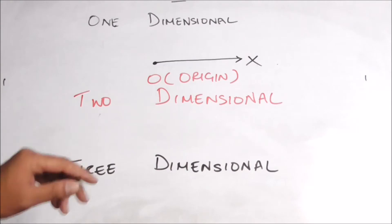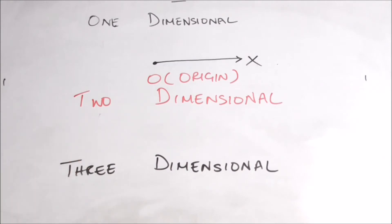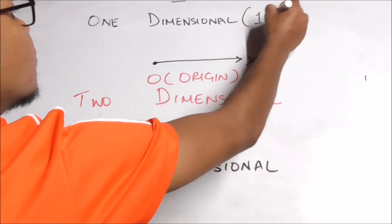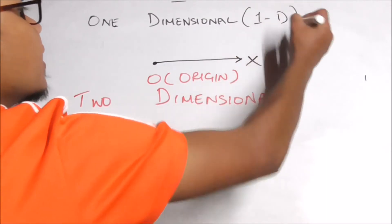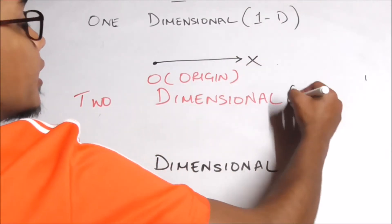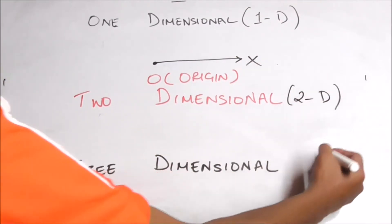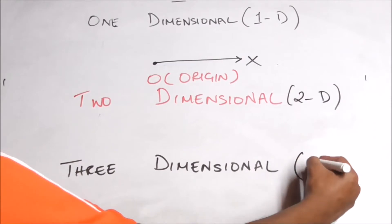One dimension, two dimensions, or three dimensions. The dimensions are 1D, 2D, and 3D.